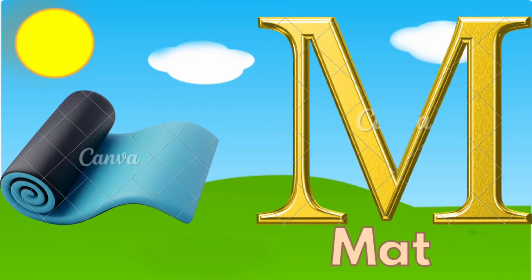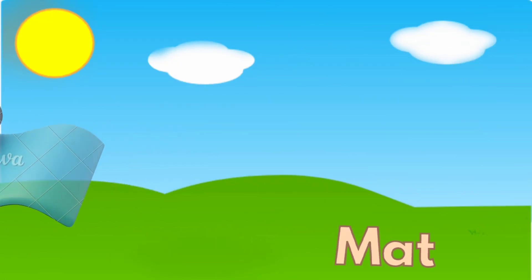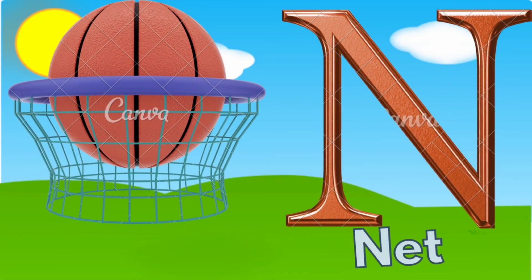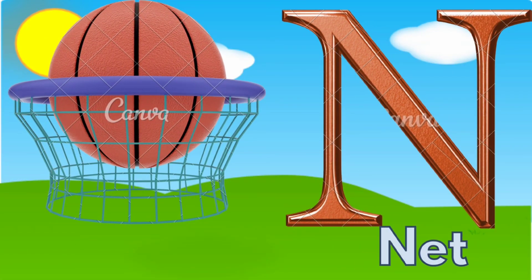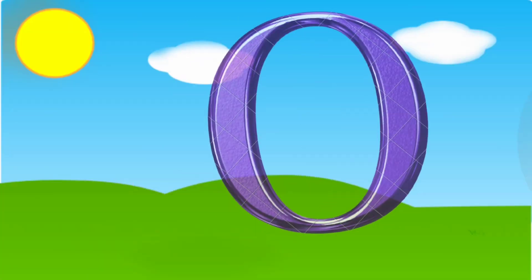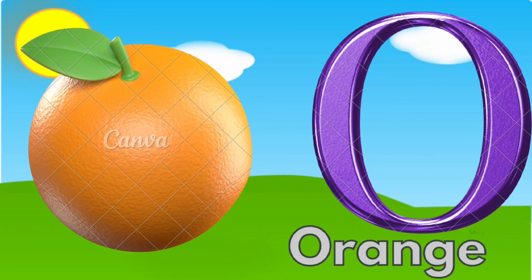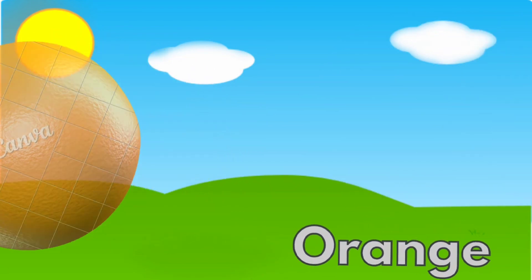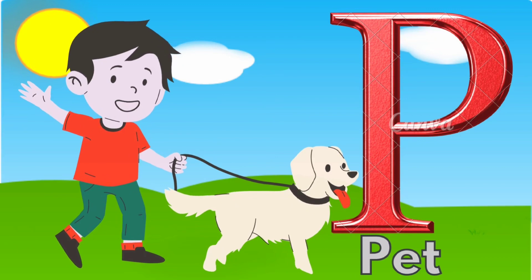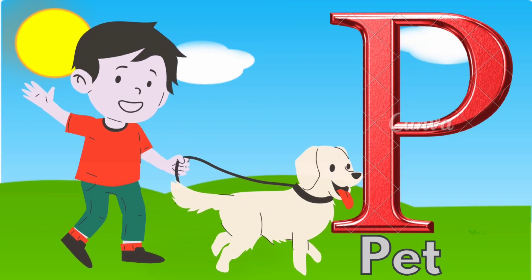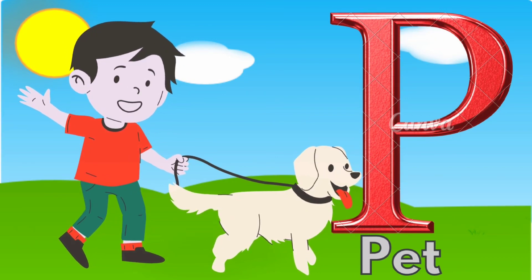M is for Mat, M-M-Mat. N is for Net, N-N-Net. O is for Orange, O-O-Orange. P is for Pet, P-P-Pet.